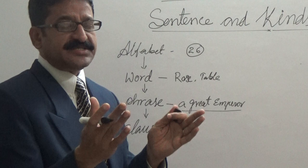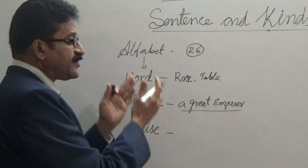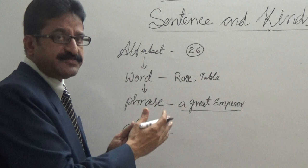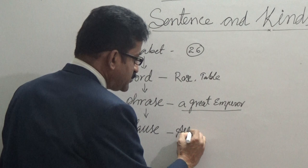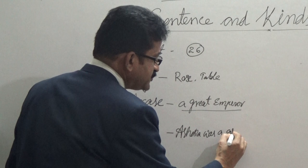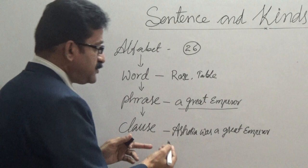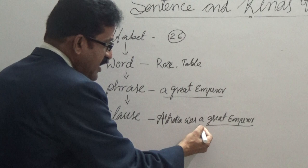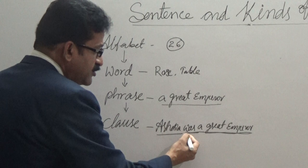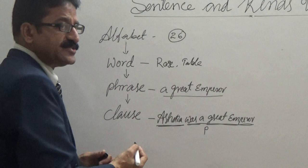A clause is one which has a subject and a predicate. Along with this phrase, if it contains a subject and verb, that makes a clause. For example, 'Ashoka was a great emperor.' Here, along with this phrase we have a verb and a subject. This phrase along with the verb makes the predicate. This is called a clause.